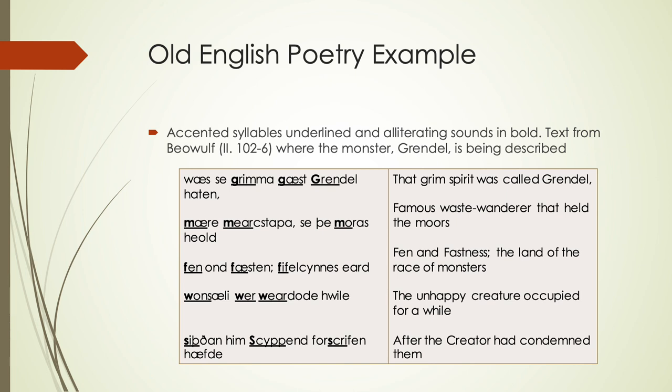The M sound alliterates in the second line, the F sound in the third line, the W in the fourth line, and then it's a 'sh' sound in the fifth one — 'scythan,' 'sci,' 'forscrifan.' You'll notice that in 'forscrifan' the alliterating sound is not in the first syllable but is in the root syllable — so it's not always syllable-initial if something additional has been added. But the root is going to hold that stress pattern. That gives us an idea of the kinds of things we see in phonology during the Old English time period.